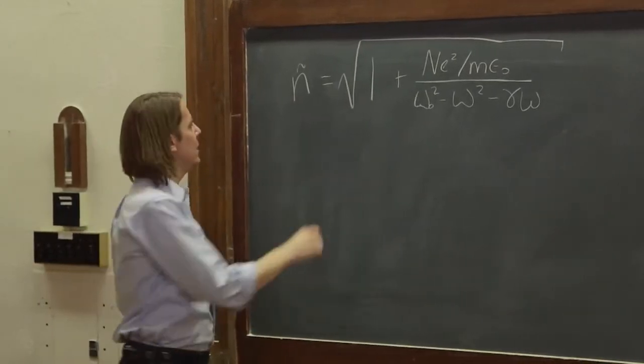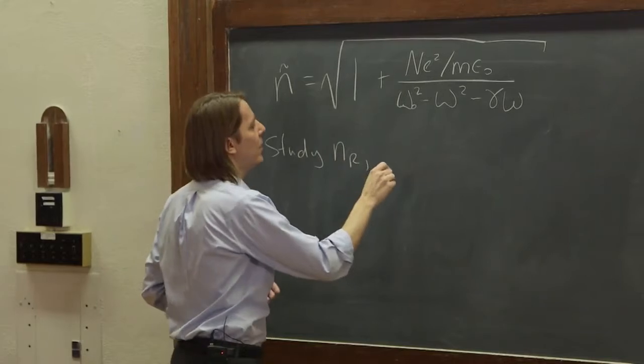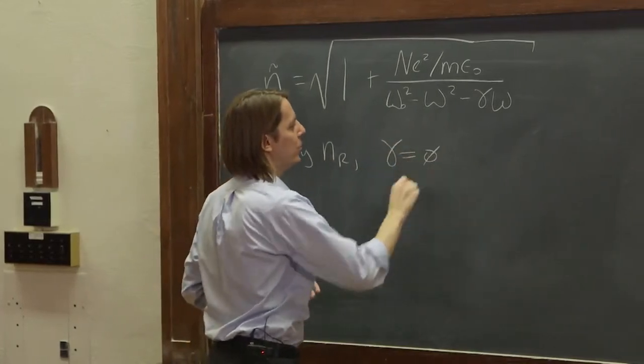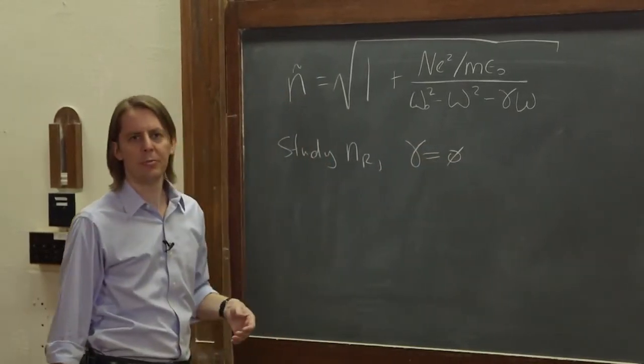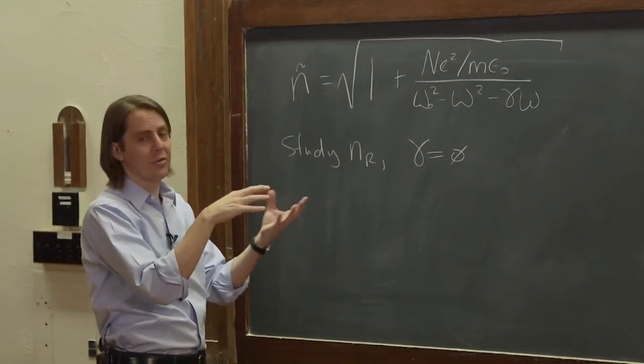But if we want to study nR, let's just let gamma be equal to zero. Let's pretend there's no absorption. So we're still modeling it as a little oscillator, we're just modeling it as an oscillator with no damping.